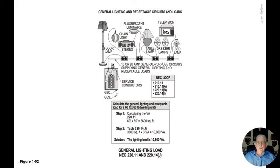Notice in the illustration that you have your panel board, with circuits there supplying lighting loads and receptacle loads. Each circuit would have two or more outlets on it to be considered a general purpose circuit as defined in Article 100 of the NEC. The boxed-in information shows the procedure for determining this general lighting and receptacle load.